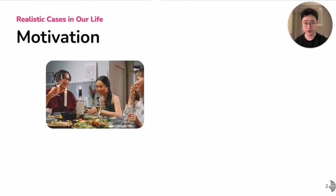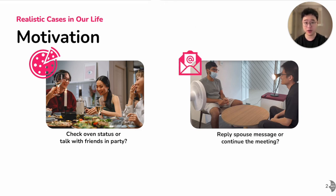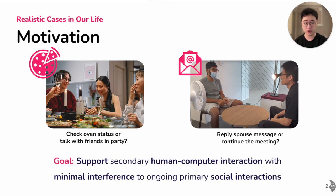Have you ever faced the scenario where you are the only host of a party? You may need to juggle between talking with your guests and checking the cooker status in the kitchen. Or, you are asked to attend an ad-hoc meeting after work but your spouse doesn't know what happened — they may send you a message. Will you stop the conversation to reply, or just ignore the message and upset your spouse? As you can see, users always need to make a decision between digital interaction needs and social interaction needs. This work aims to help users balance these two needs by supporting human-computer interactions with minimum interference to the ongoing primary social interactions.